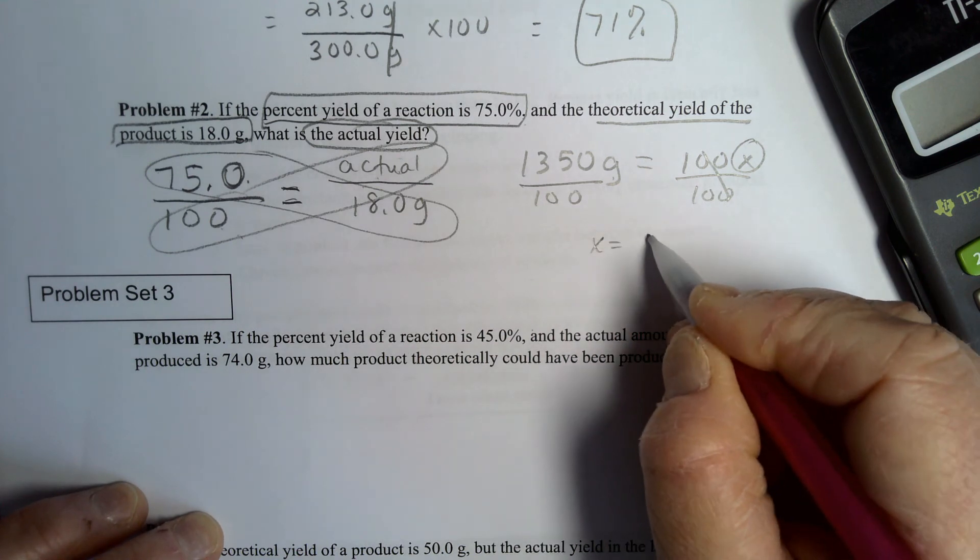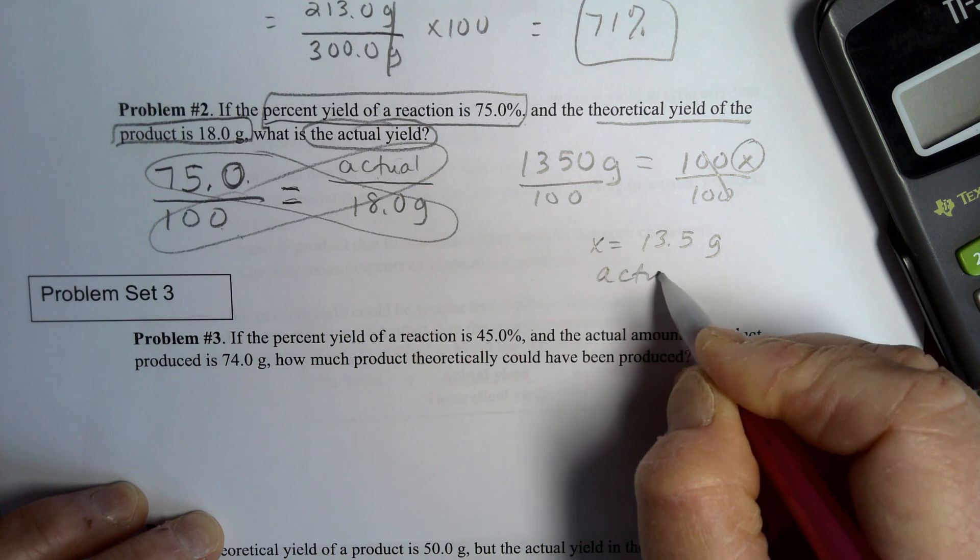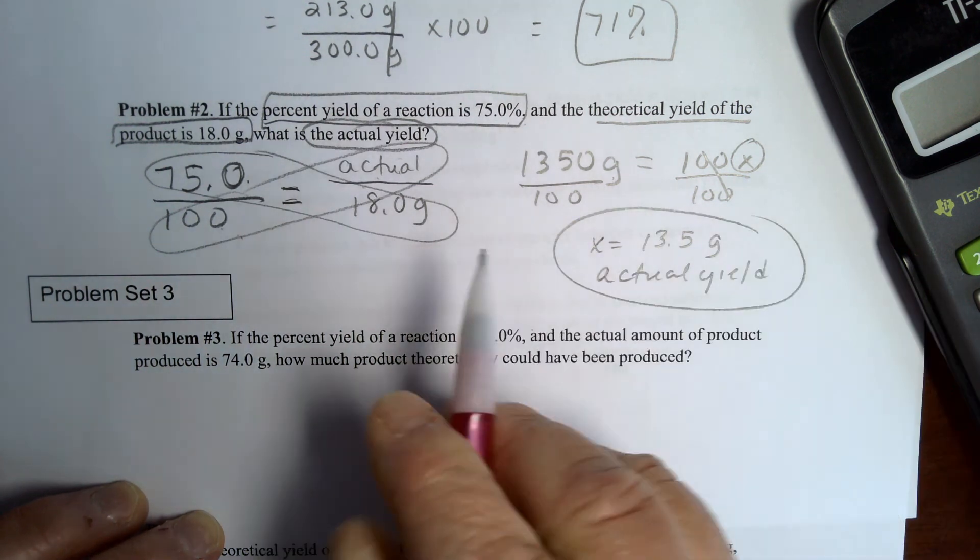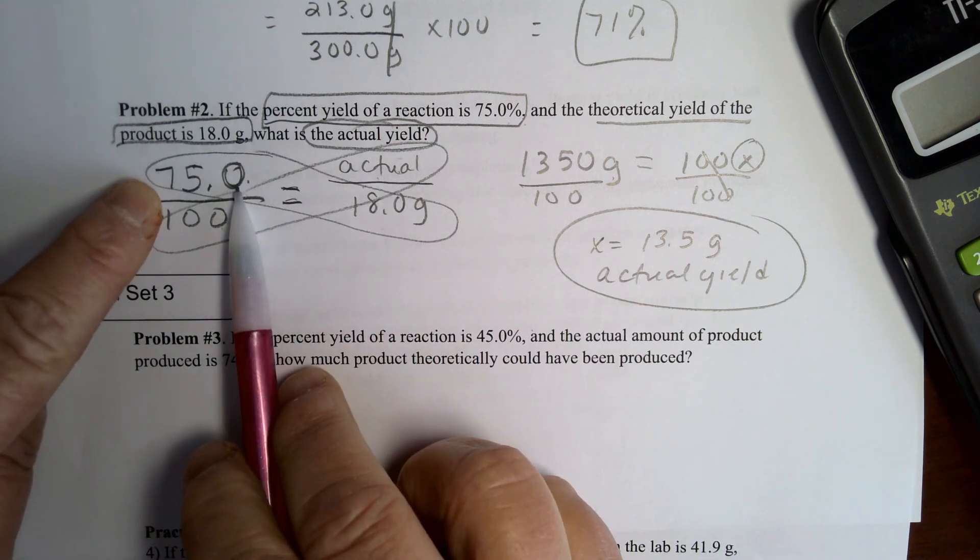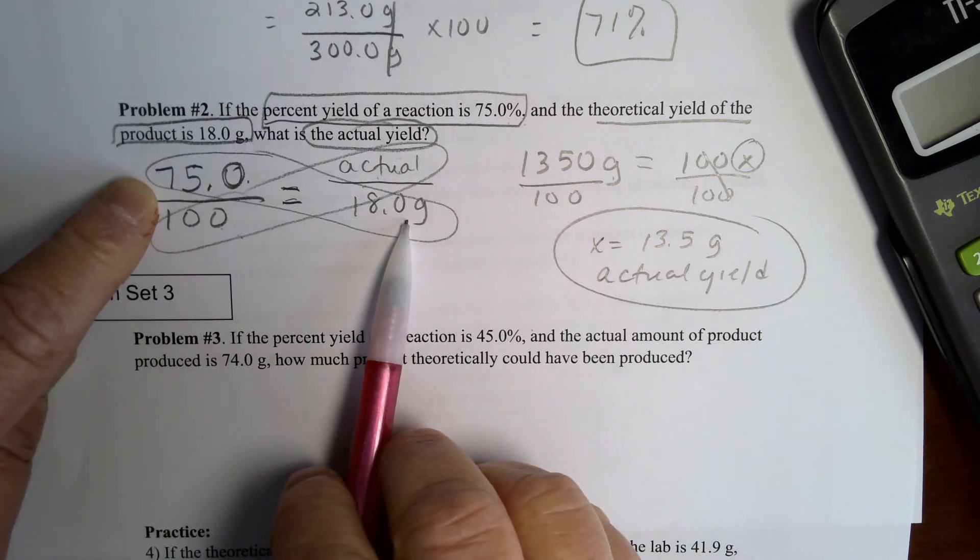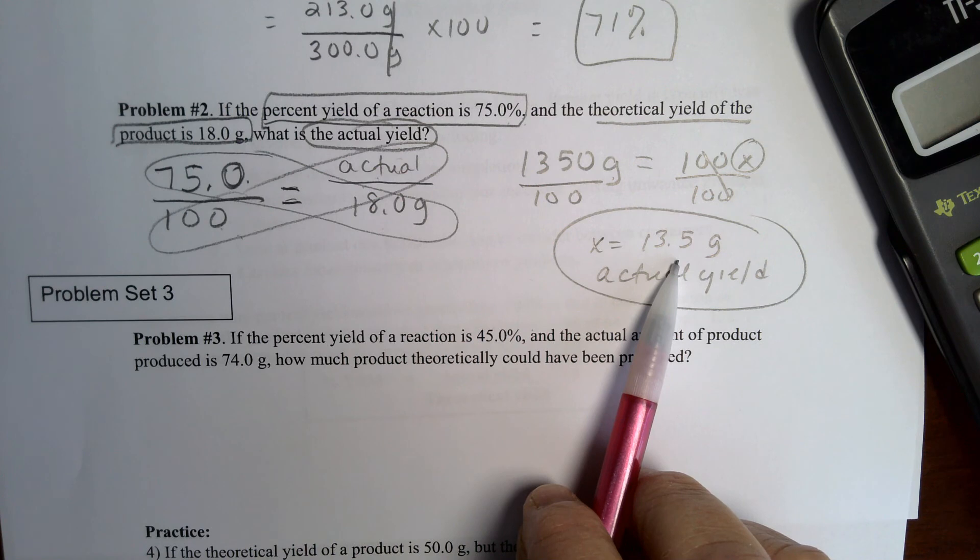And this should make sense. Our theoretical yield was 18, so our actual yield, we knew the percent yield was 75%, so we know it's going to be less than our theoretical and is definitely less by about 25%.